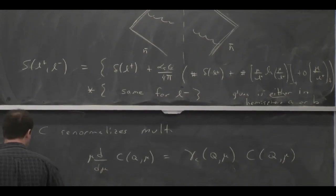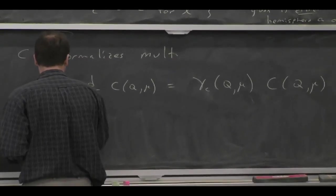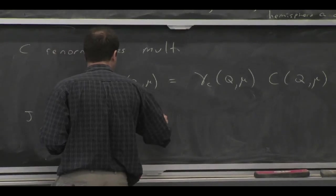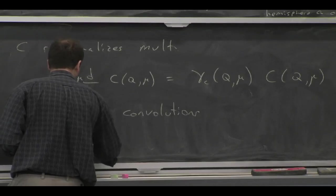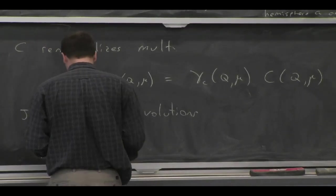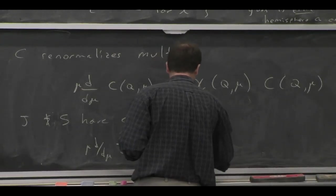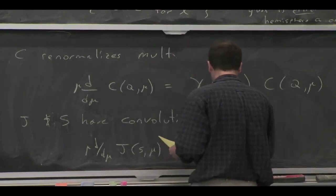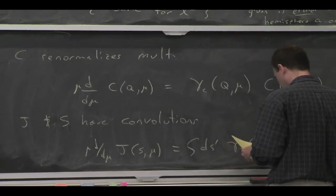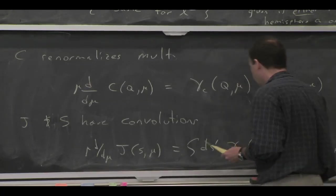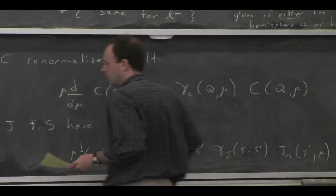But the jet function and the soft function have convolutions in this case. Well, they depend on this non-trivial momentum. And you can see in the factorization theorem that it's convoluting between two different sectors. And that kind of generically a hint that you're going to get out a formula like this, which is like the PDF. But now it's a different formula. You have this kind of anomalous dimension for the jet function.